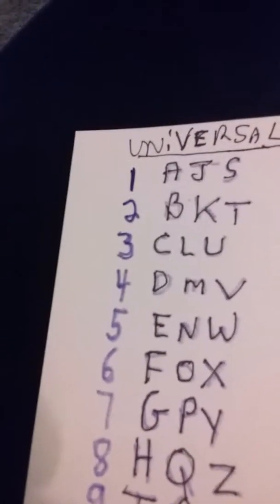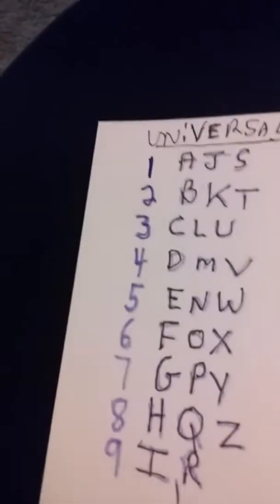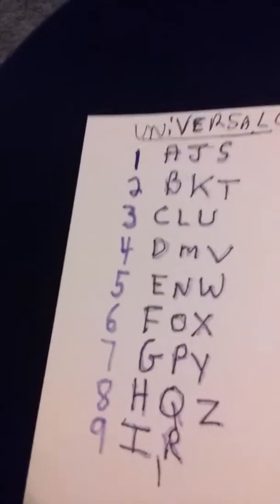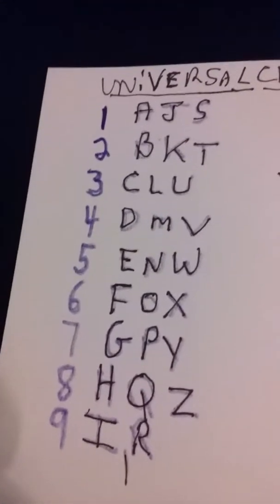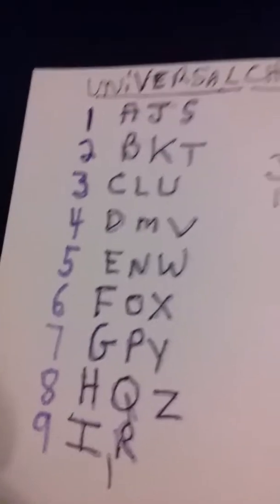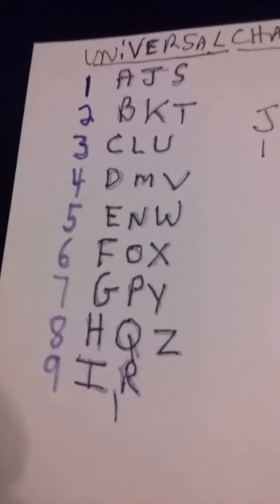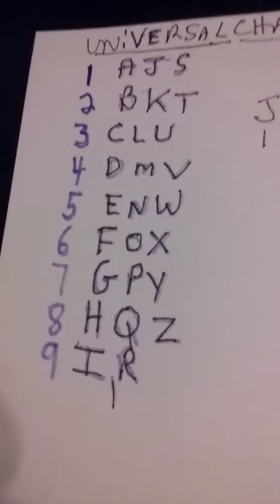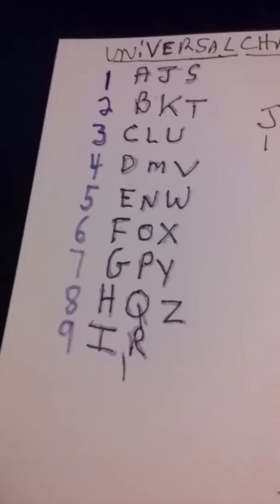Or if they have any ENW, which is the 5th, 14th, and 23rd letter of our alphabet. Or FOX, and that's the 6th, the 15th, or the 24th letter. Or any GPY, which is the 7th, 16th, or 25th letter of our alphabet. Or HQZ, which is the 8th, the 17th, and the 26th letter of our alphabet. Or the IR, which is the 9th and the 18th letter of our alphabet.